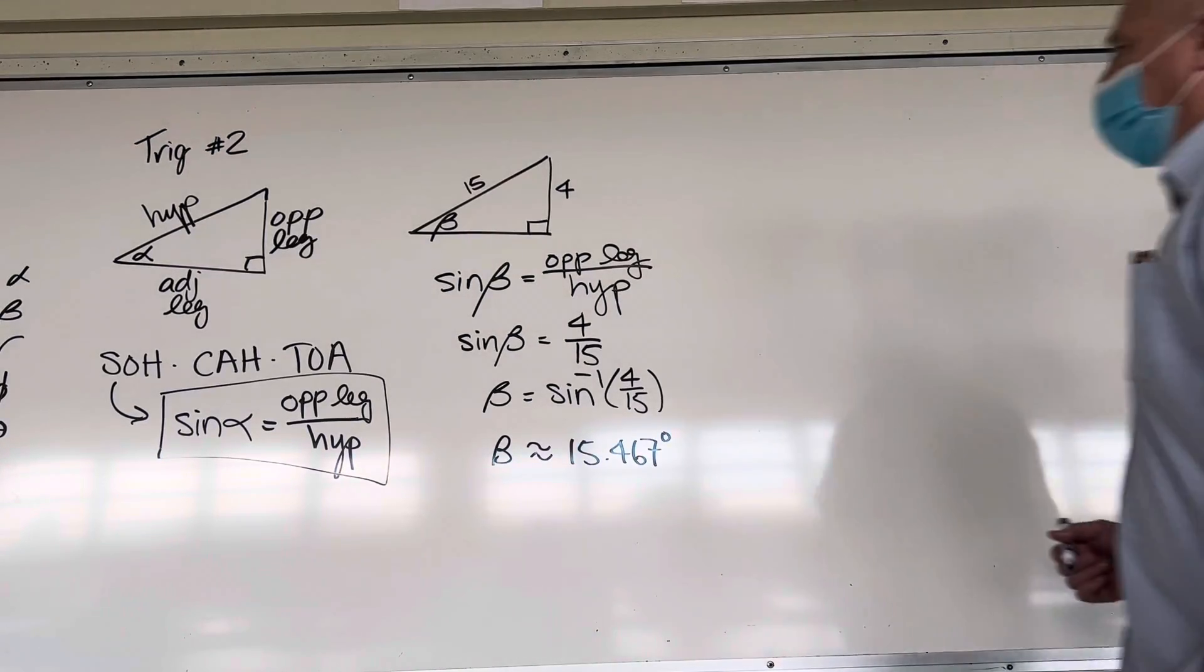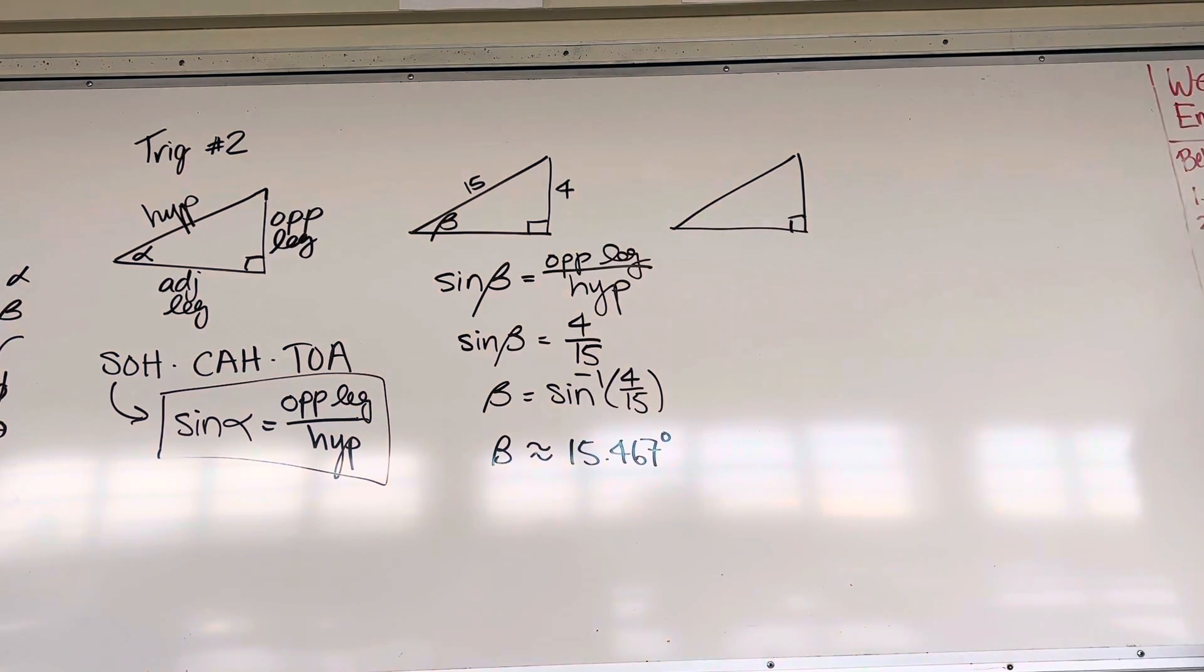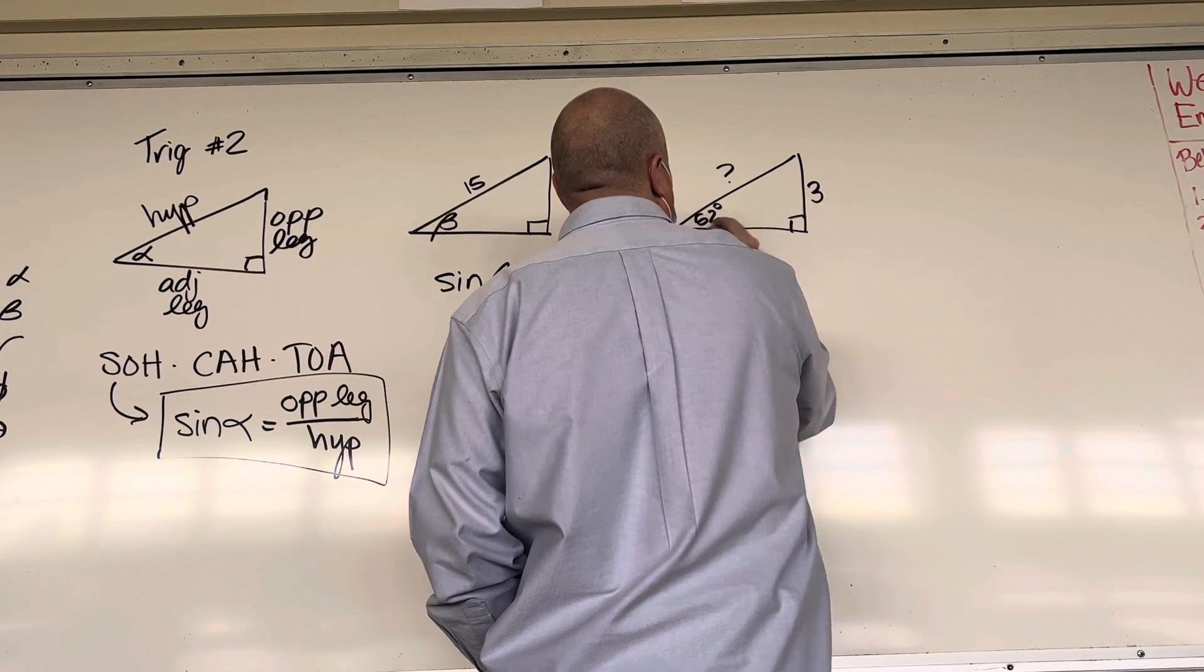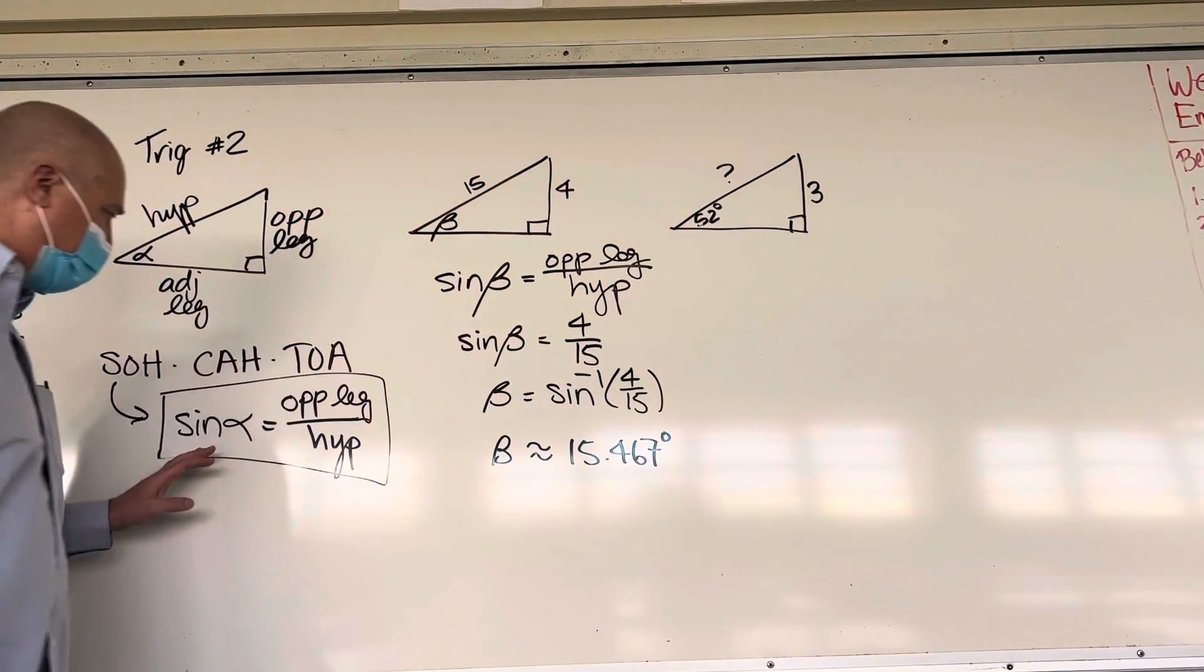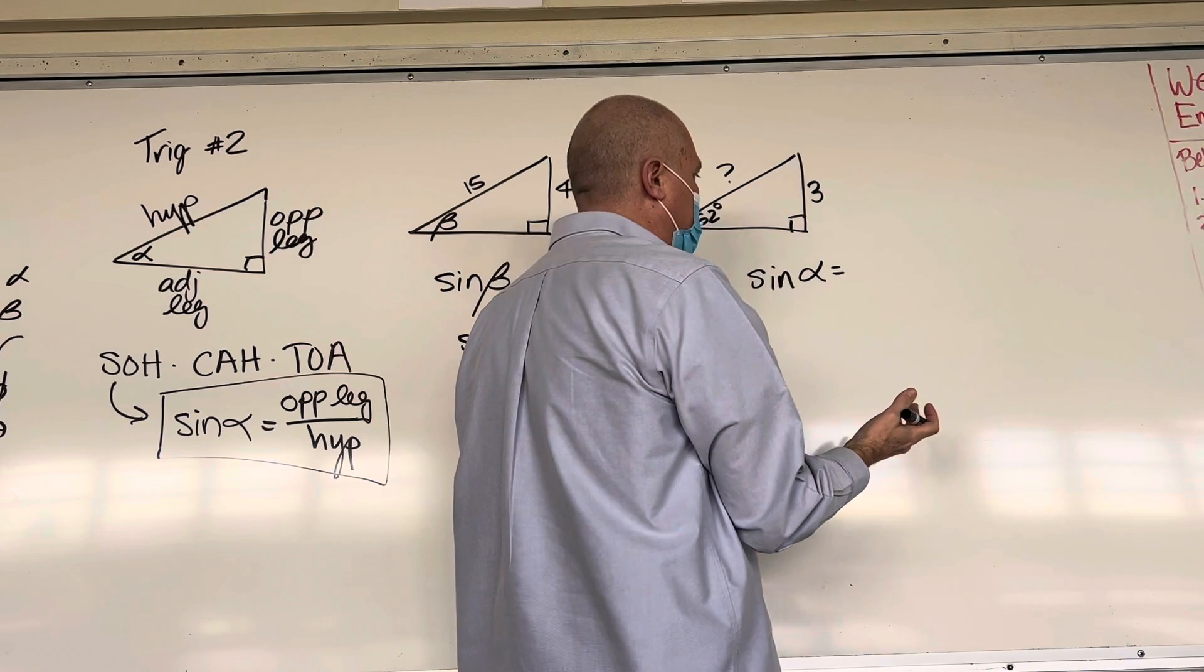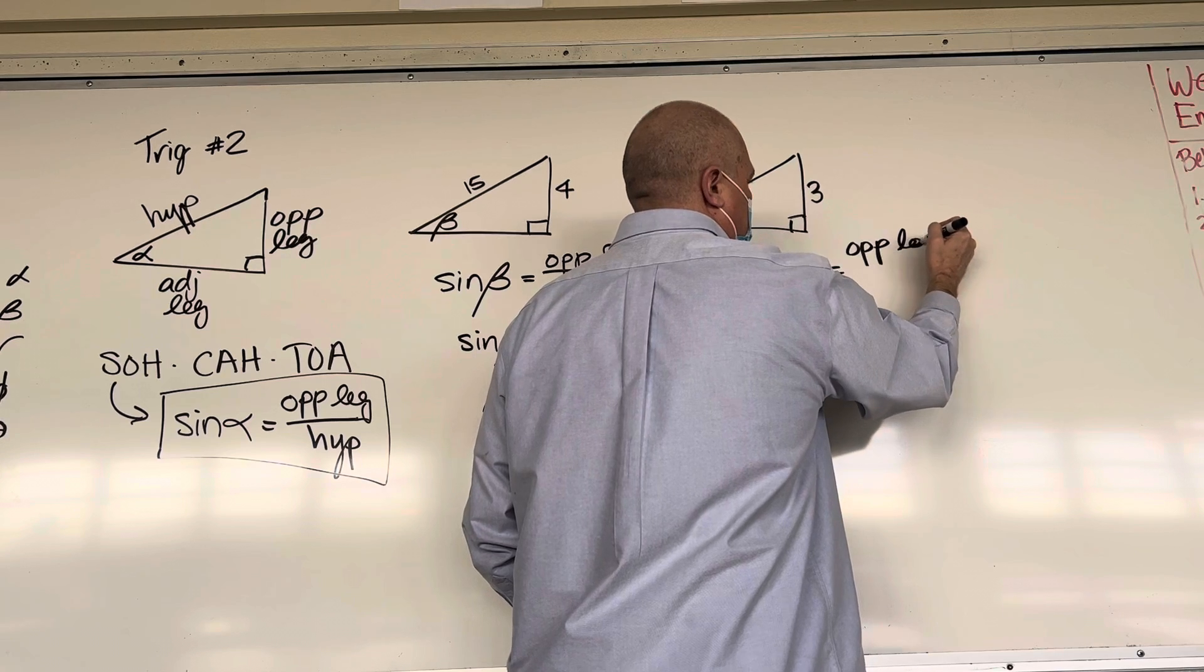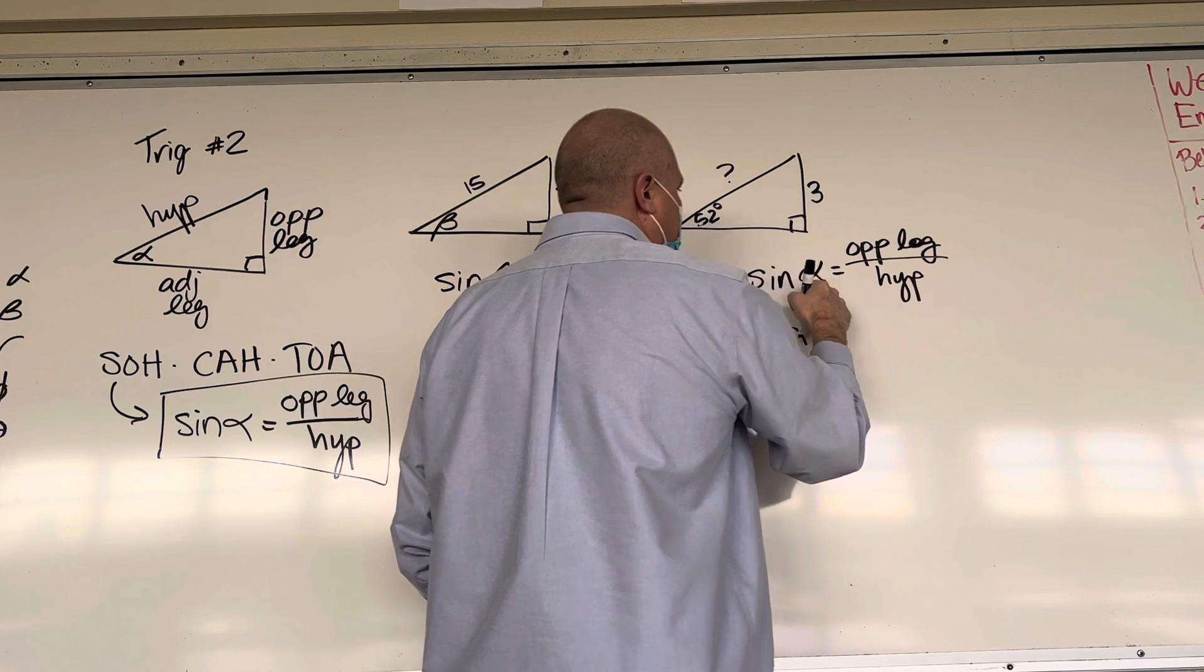Now let's do another problem. Let's do 3 question mark 52 degrees. So now we're given the side length of 3. Here we've got a question mark and we know the angle is 52 degrees. I wrote 52 very badly there. 52 degrees. Let's go back and start with our sine function. And say sine. In this case I'll drop in alpha. Doesn't matter alpha or beta. It's just a different variable. Op leg over hyp.